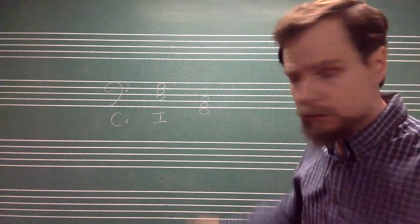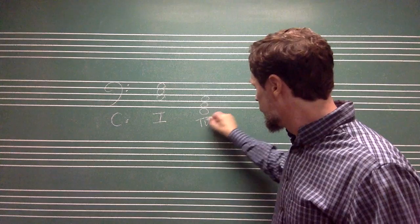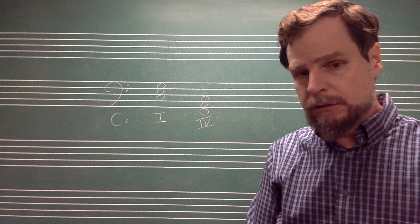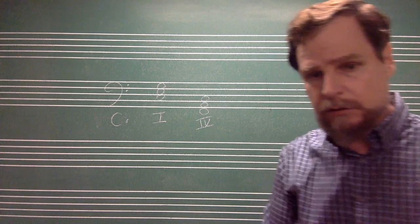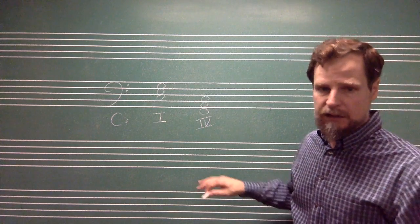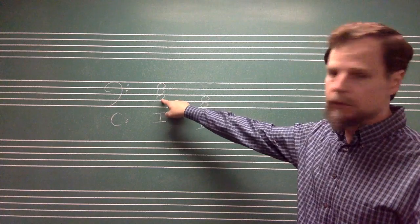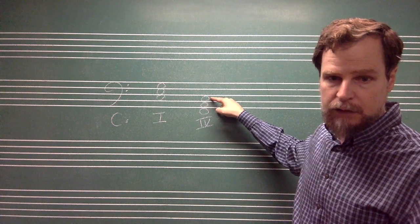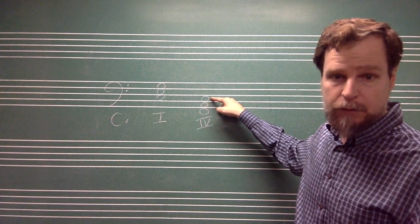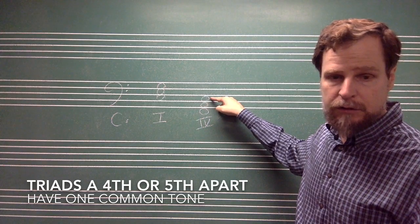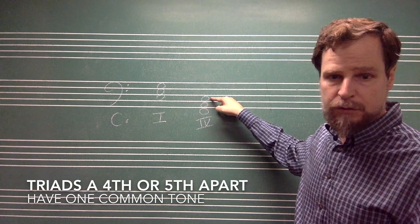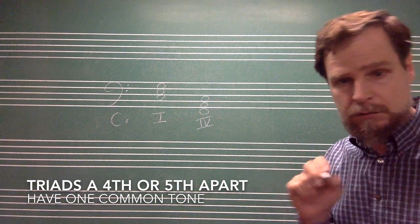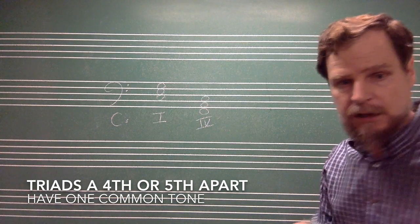And there's the four chord. Notice that the reason I drew it that way was so that you could see this connection that they have. The C, that's the root of the one chord, is also the fifth of the four chord. So these two chords, which are a fourth or a fifth apart, have one note in common, or we're going to call it a common tone.